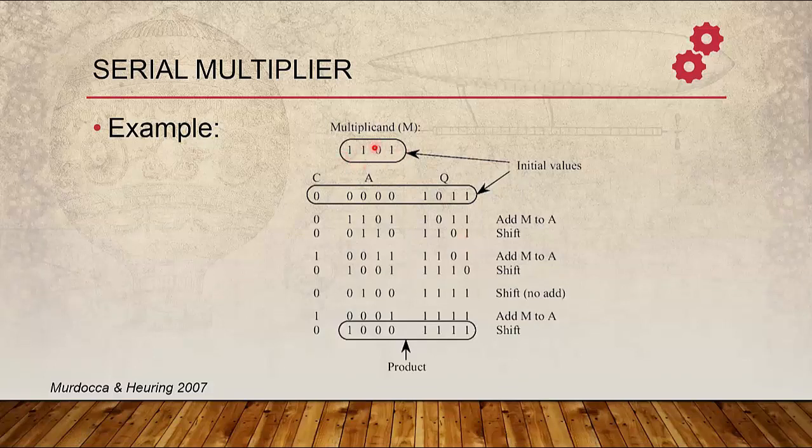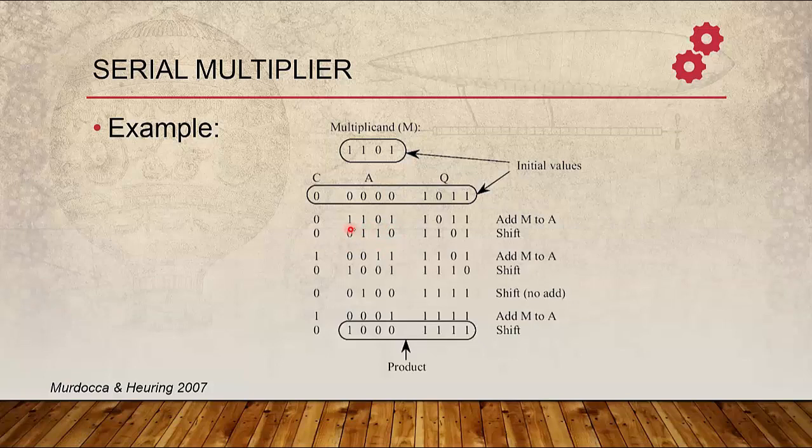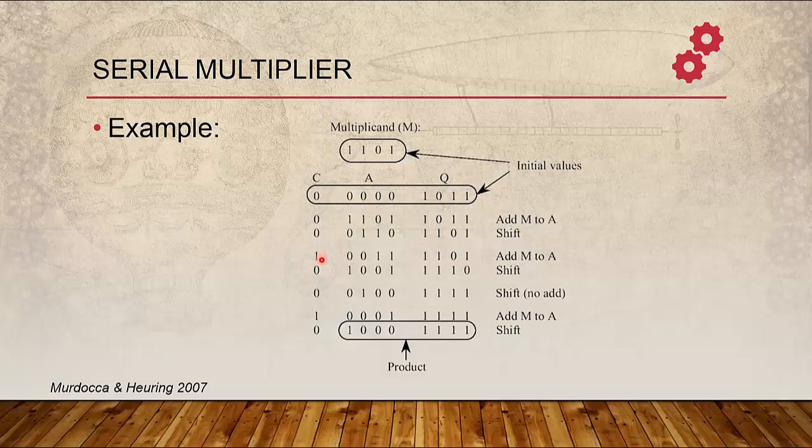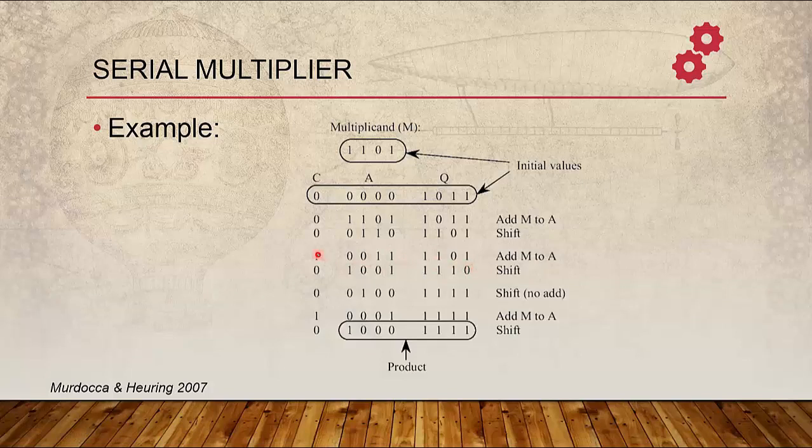So we are adding again the Multiplicand 1101 to register A which is now 0110. We get 1001, and there is a Carry. After adding, we need to shift. So we get in register Q 1110, and register A becomes 1011 because the Carry goes into MSB of A.